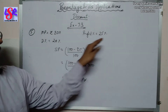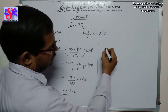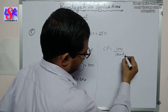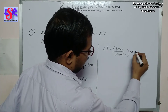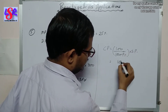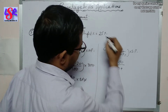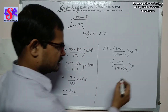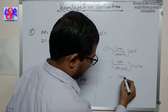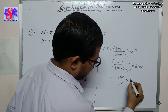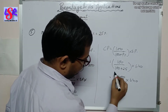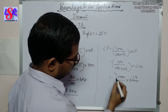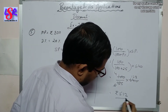Now with the selling price and profit percent we will find the cost price. The formula is: CP = 100 / (100 + profit%) × SP = 100 / (100 + 25) × 640 = 100 / 125 × 640. Simplifying: 128 × 4 gives rupees 512 as the answer for cost price.